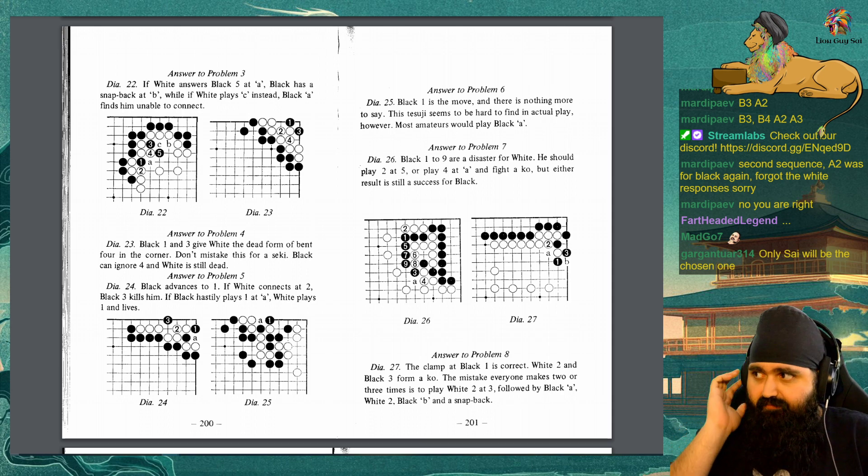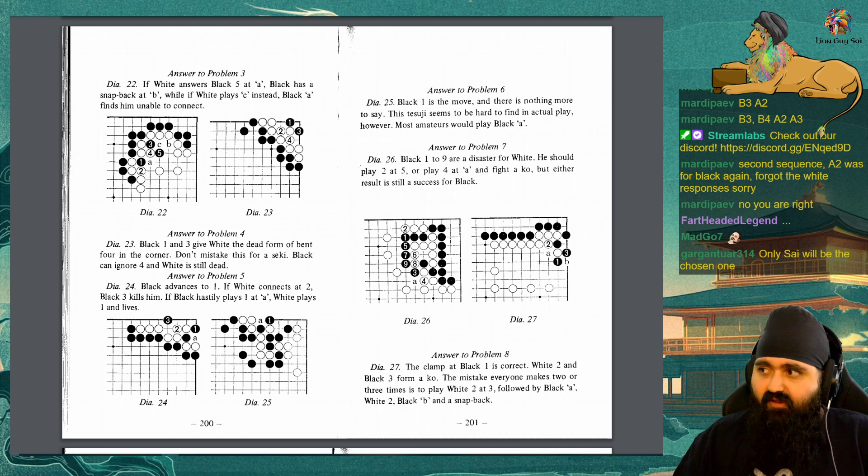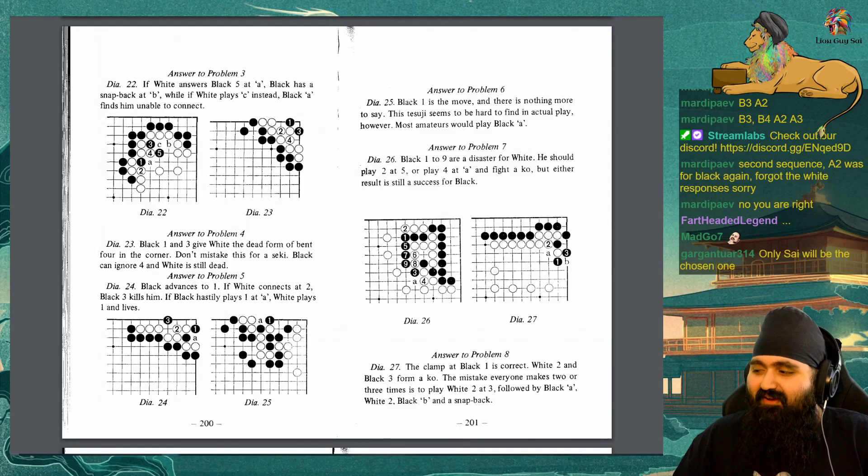Answer to problem 4: Black 1 and 3 give white the dead form of bent 4 in the corner. Don't mistake this for seki. Black can ignore 4 and white is still dead. Answer to problem 5: Black advances to 1. If white connects at 2, black 3 kills him. If black hastily plays 1 at A, white plays 1 and lives. Answer to problem 6: Black 1 is the move. And there is nothing more to say. This tesuji seems to be hard to find in actual play however. Most amateurs would play at A. Answer to problem 7: Black 1 to 9 are a disaster for white. He should play 2 at 5 or play 4 at A and fight at ko. But either result is still a success for black.